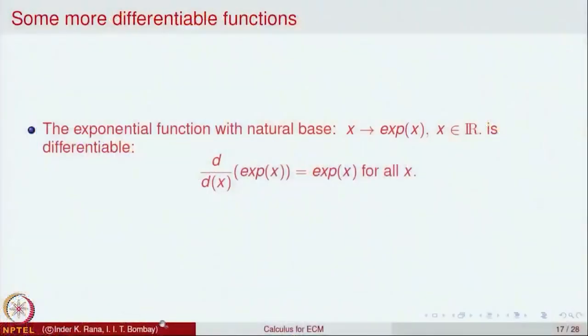The first one is the exponential function, which we have already come across. The exponential function with the natural base e is the function x mapping to e^x, for x belonging to ℝ. This is a differentiable function and the derivative of this function is the function itself. In fact, this is the only function in mathematics which has the property that its derivative is itself and takes the value 1 at x = 0.